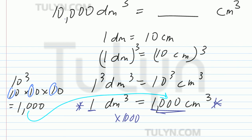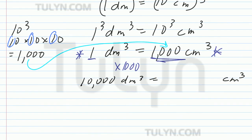If you're given 10,000 decimeters cubed, right, go ahead and apply that rule. 10,000 decimeters cubed equals how many centimeters cubed. And then, you can just go ahead and apply that rule, right? Times 1,000.